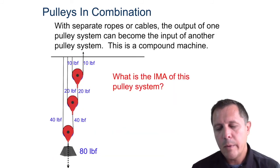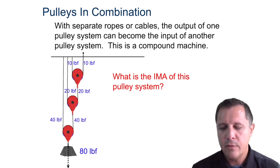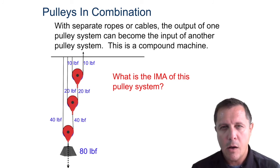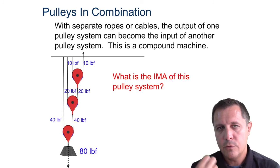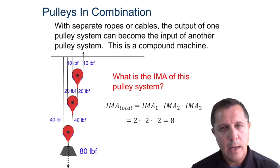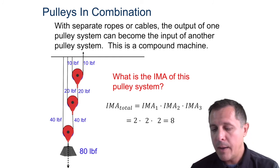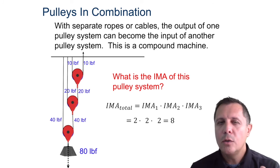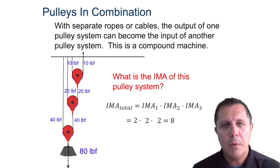Here's another compound machine. What is its IMA? I have three movable pulleys, and they all have two strands supporting it. So we have 2 times 2 times 2, and we get 8. That is the IMA — you just take all the IMAs in the machine and multiply them all together.